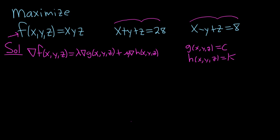Which one is g, and which one is h? Well, it doesn't really matter. We'll call this one g, and we'll call this one h. You see this is equal to c, and this is equal to k. Recall the gradient is a vector whose components are partial derivatives.